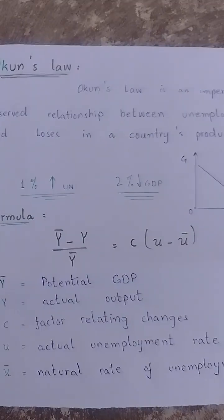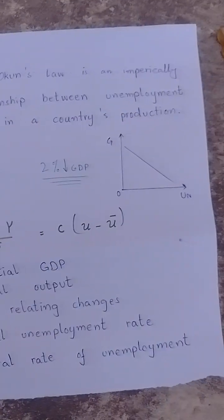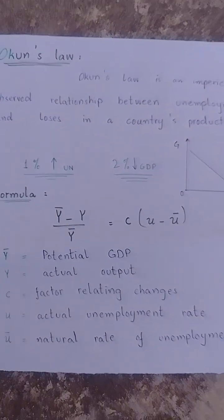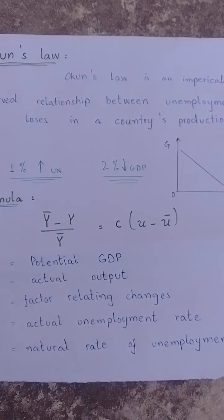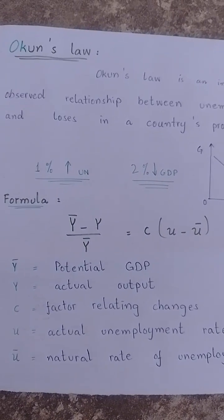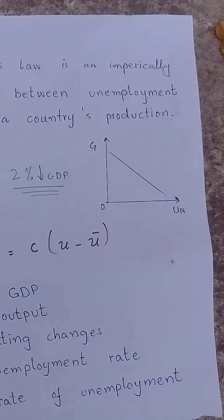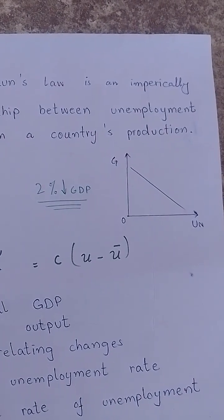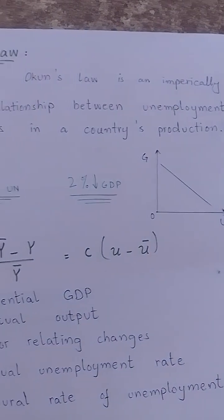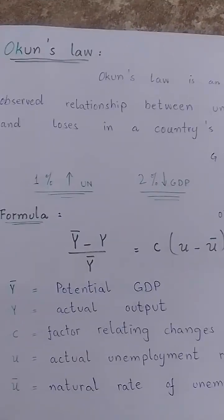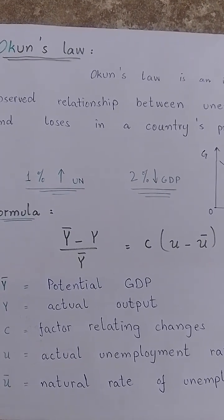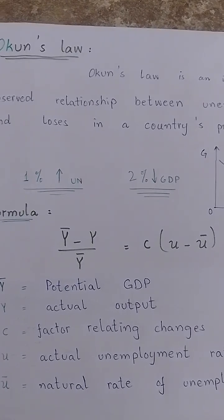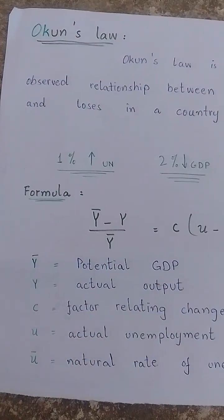Okun's Law is an empirically observed relationship between unemployment and gross domestic product growth. It has a negative relationship, as shown in the graph, with a slope that is downward from left to right. The right axis represents unemployment and the left represents growth — a 1% increase in unemployment will decrease GDP growth rate by 2%.